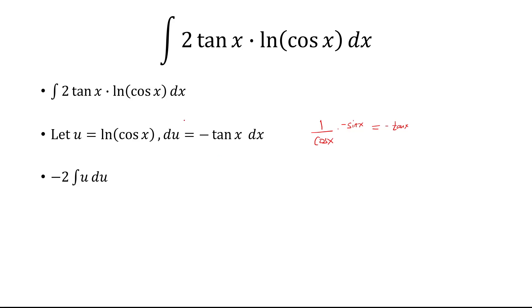And so now ln of cosine x is u, we have 2 tangent x dx. I factor out the 2, and then tangent x dx is negative du, so I just put the negative outside, so we have negative 2 integral u du.